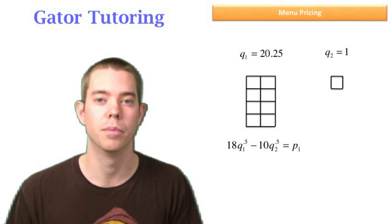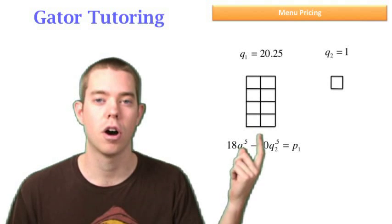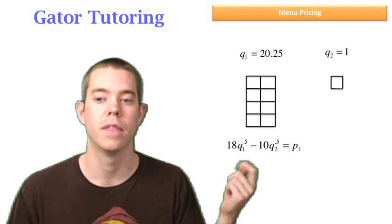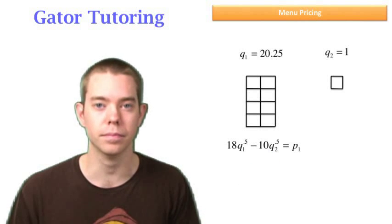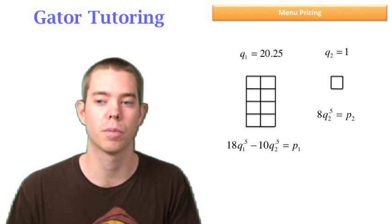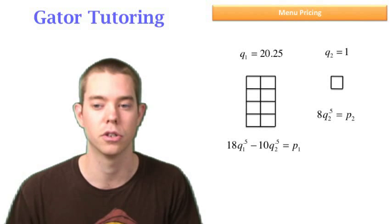Notice that the big package's cost or the big package's price, which is the cost to the consumer, that depends on the small package's quantity, which is important to understand. And the price for the smaller package, P2, we know that that just depends on the quantity of the smaller package, Q2.